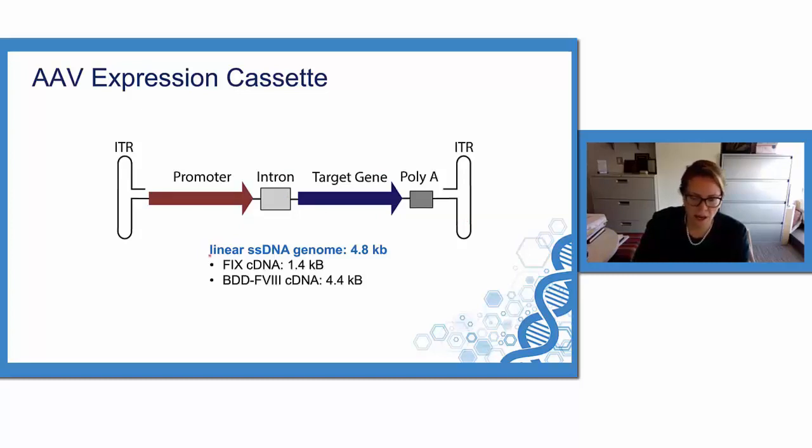The AAV genome is a single-stranded genome that is approximately 4.8 kilobases, and this is sufficient to package both Factor IX as well as a truncated version of Factor VIII, B domain deleted Factor VIII.